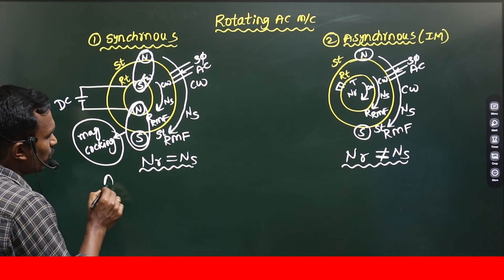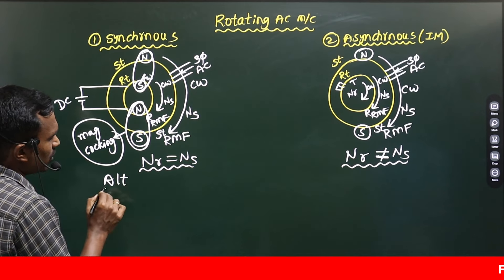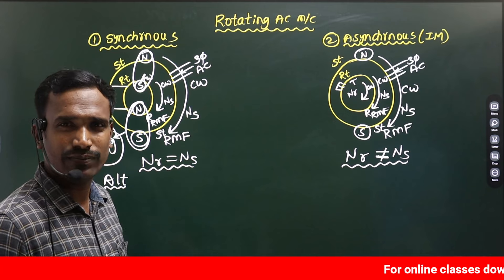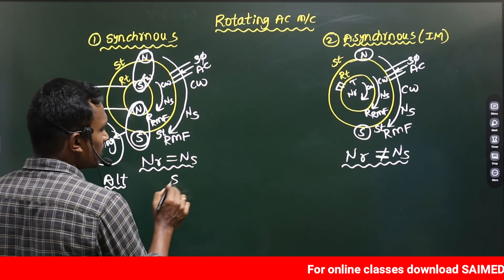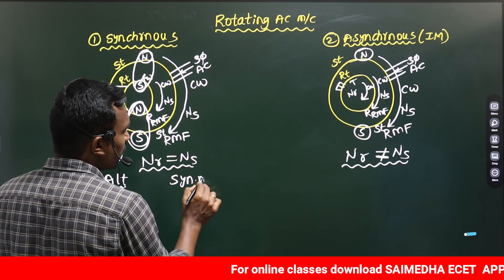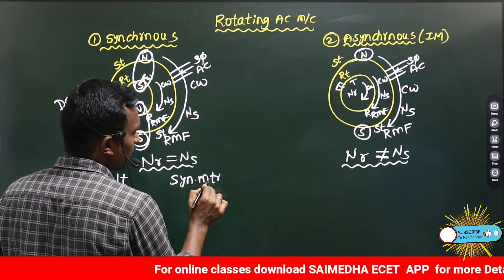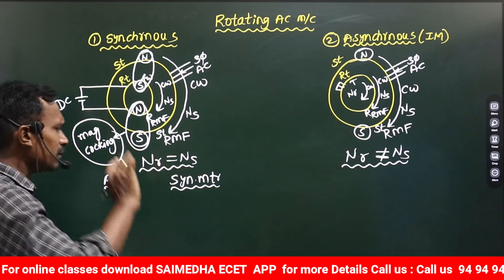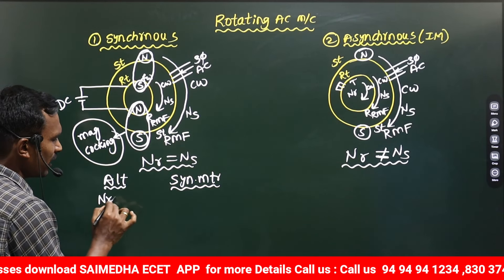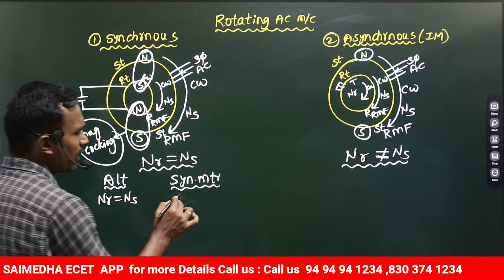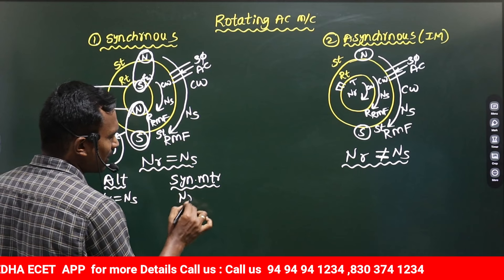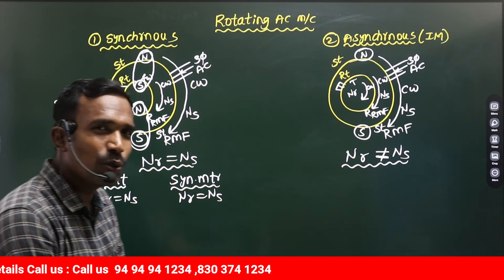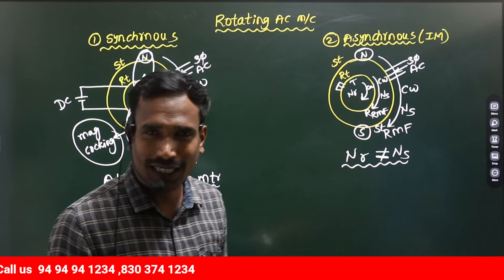Under Synchronous machines, we have two types: Synchronous generator (also called alternator) and Synchronous motor. Whether it is a Synchronous generator or Synchronous motor, in both cases the rotor speed is exactly equal to Synchronous speed — no doubt at all.